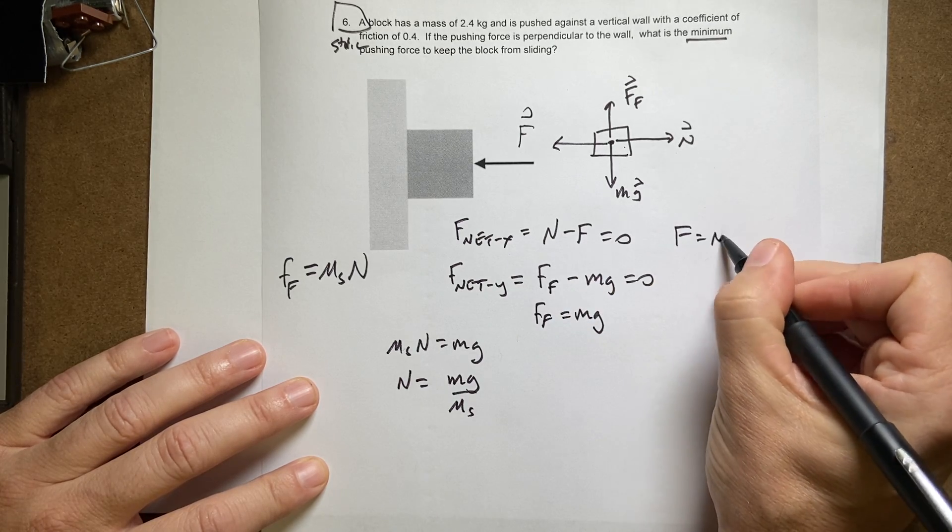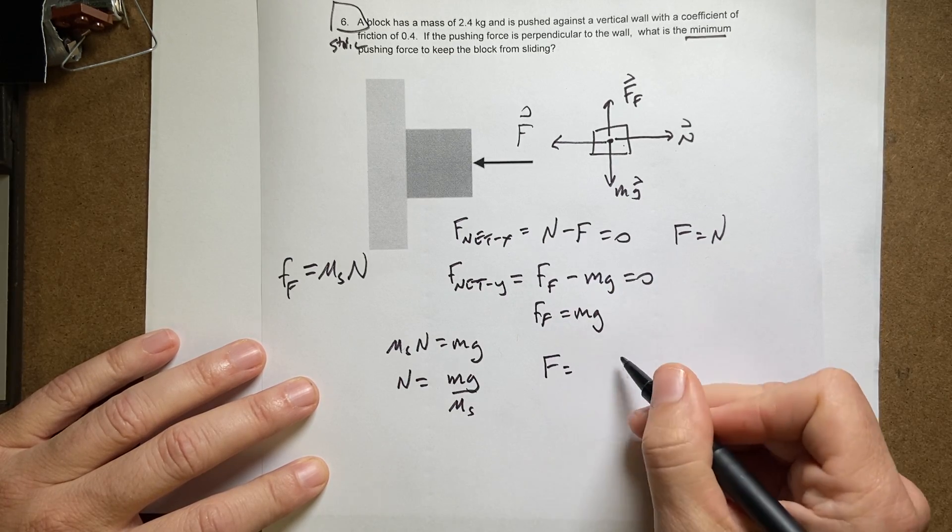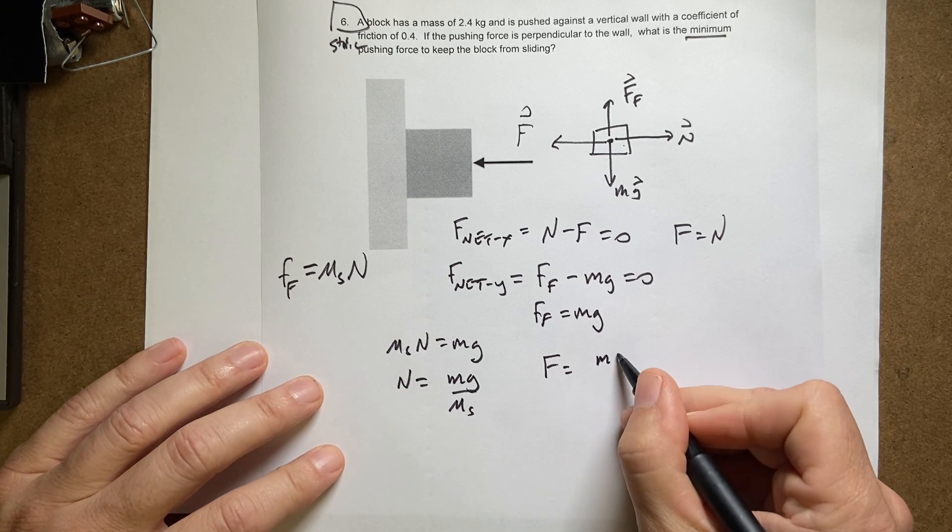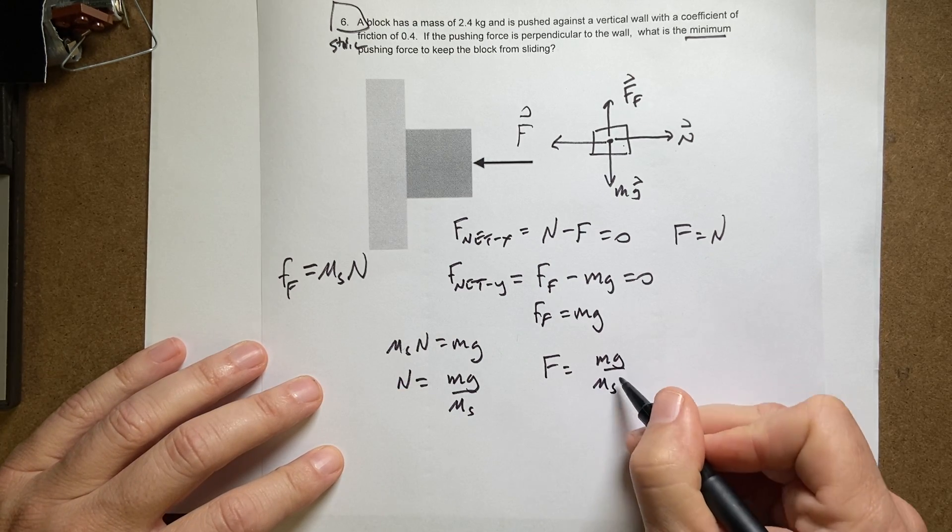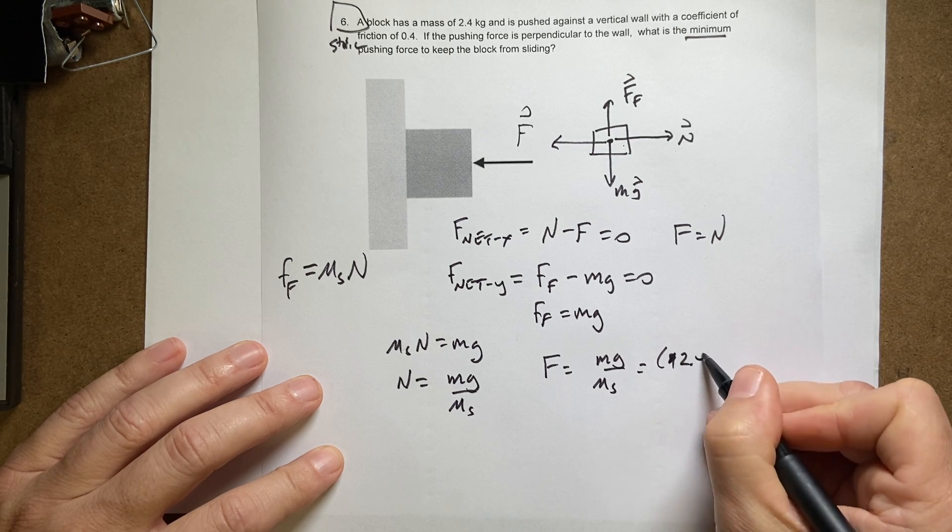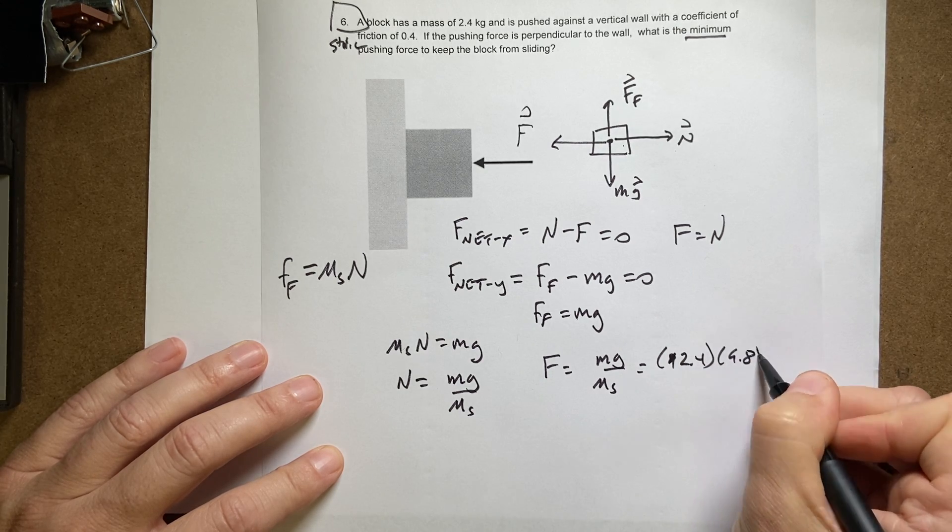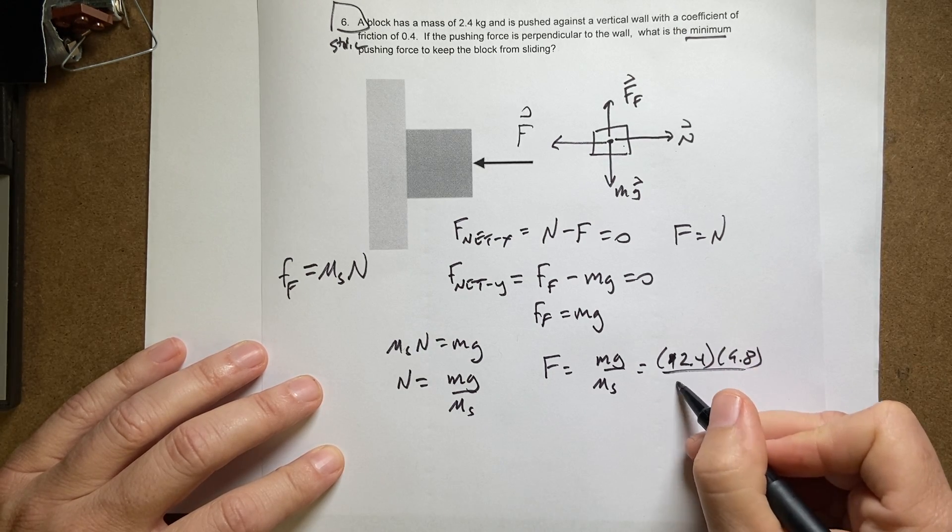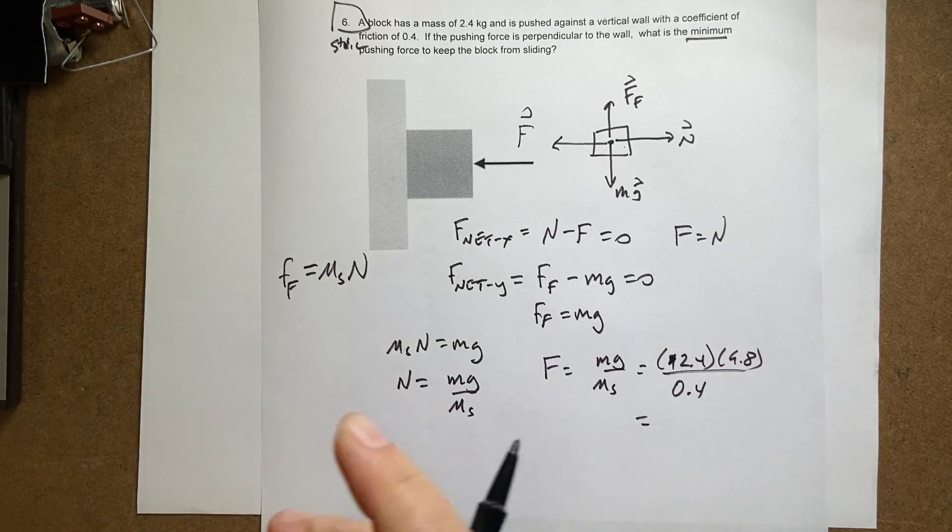F equals N. So F equals Mg over mu sub S. So it's going to be equal to 2.4, 9.8, 0.4. Put that in my calculator.